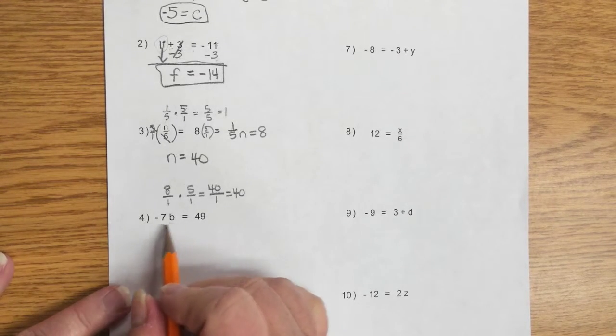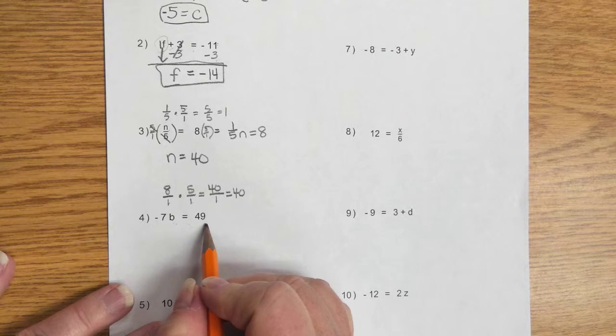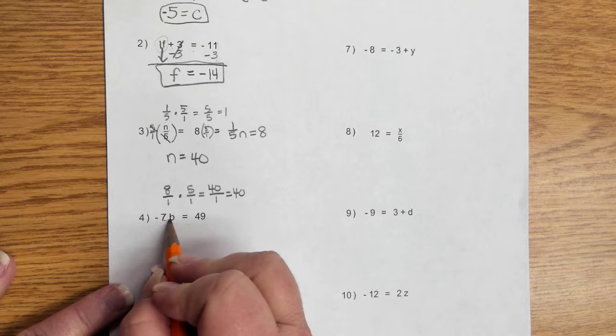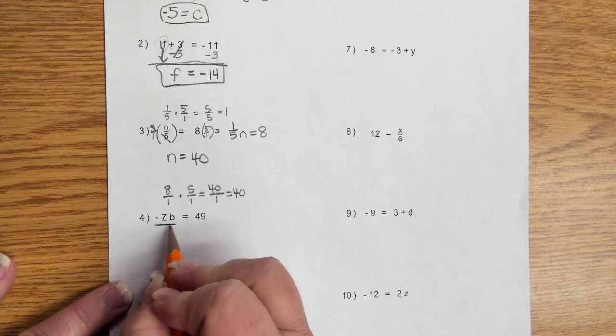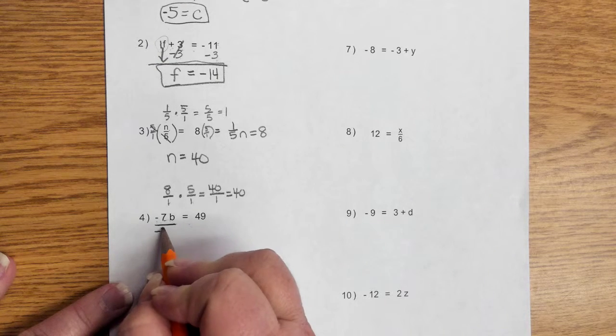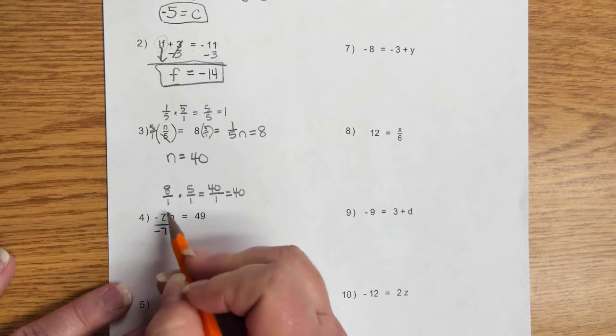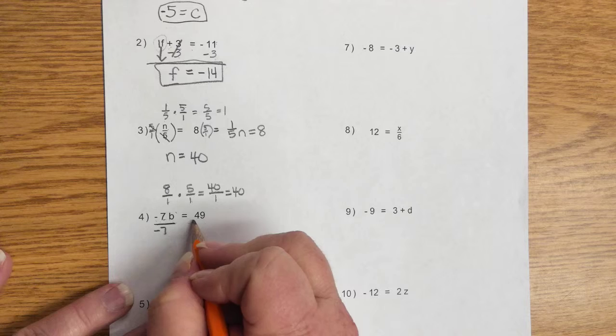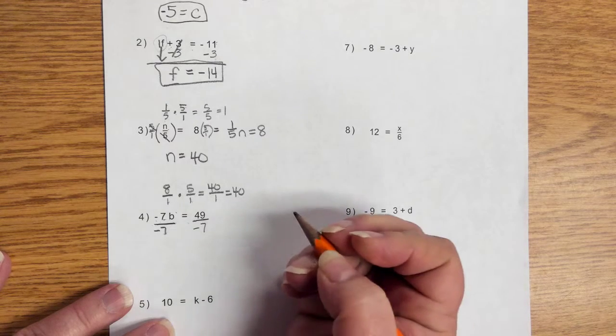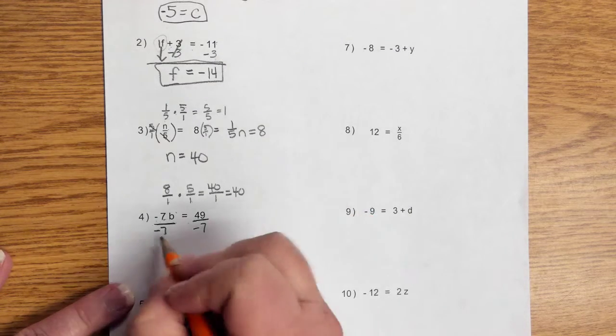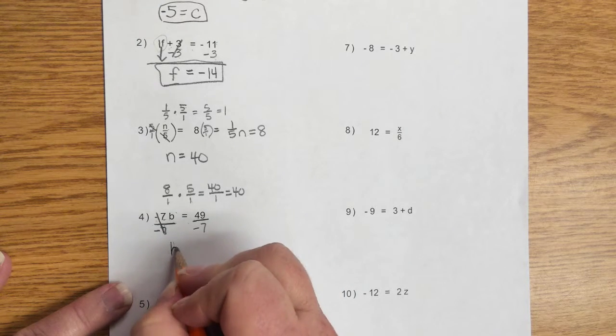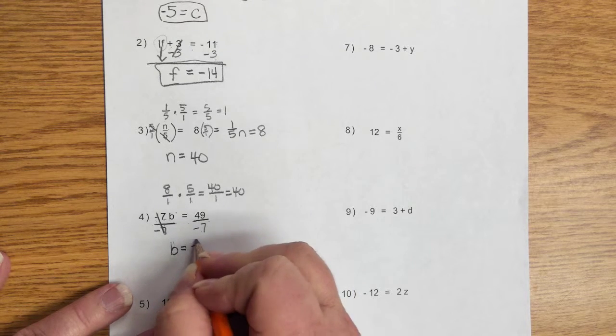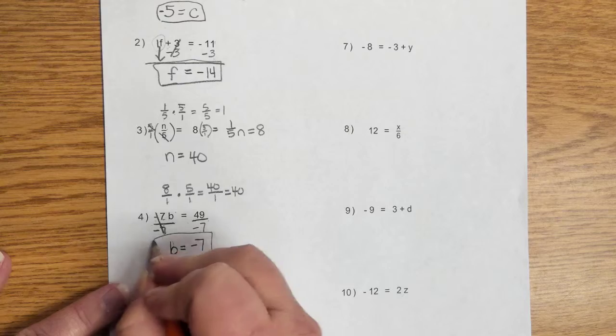Let's look at number 4. We have negative 7b is equal to 49. Alright. Well, what I'm going to do, this is multiplication. The opposite operation is to divide. And I'm going to divide by a negative 7. Because a negative divided by a negative gives you a positive. And you need to leave your variable positive. And what I do on one side of the equation, I have to do on the other side of the equation. That cancels those out. You end up with a positive b. And 49 divided by negative 7 gives you negative 7. Please box your answers.